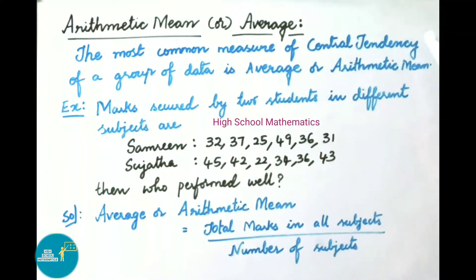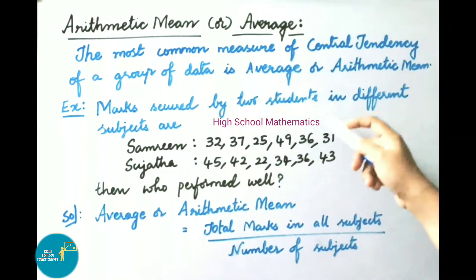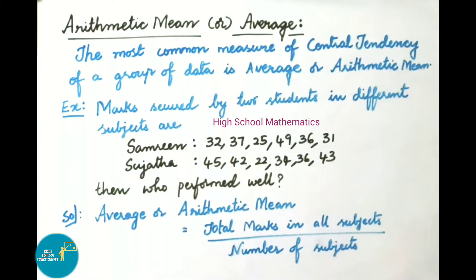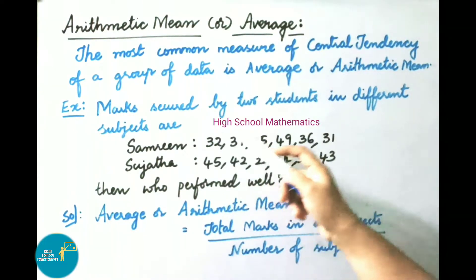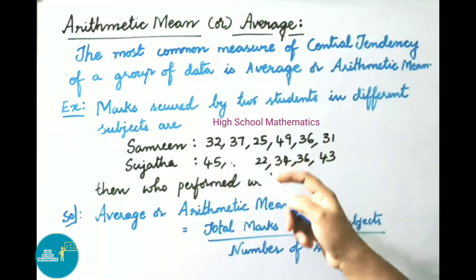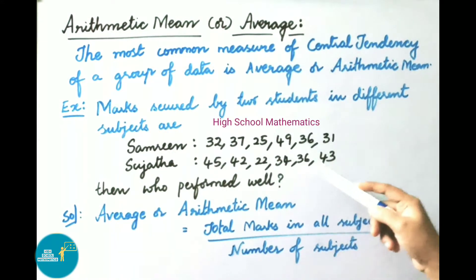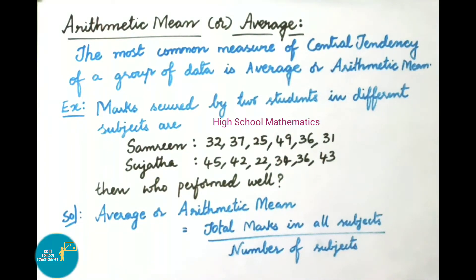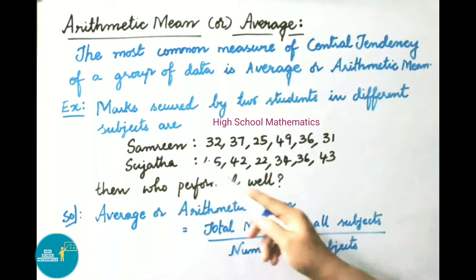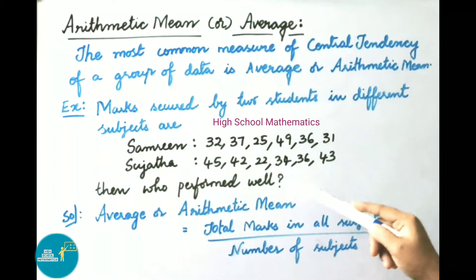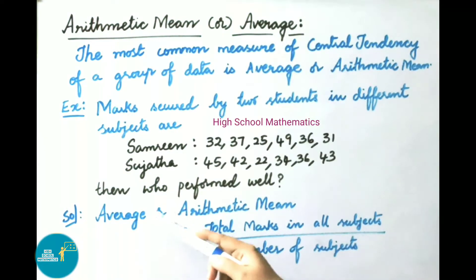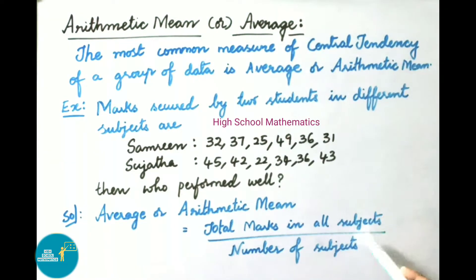Now, arithmetic mean or average. The most common measure of central tendency of a group of data is average or arithmetic mean. For example, marks secured by two students in different subjects: Sumbreen got 32, 37, 25, 49, 36, and 31 marks; Sujata got 45, 42, 22, 34, 36, and 43 marks. We have to find who performed better.